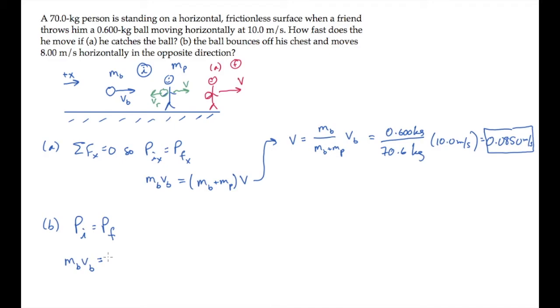In the final state, shown in green, two things are moving. The person is moving in the positive direction, so their momentum is mass of the person times v. The ball is moving in the negative direction, so its momentum is minus mass of the ball times v sub r.